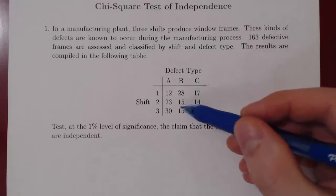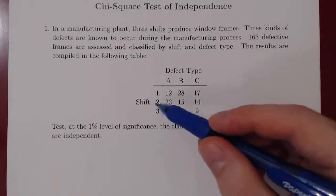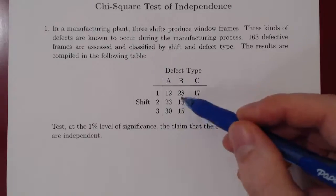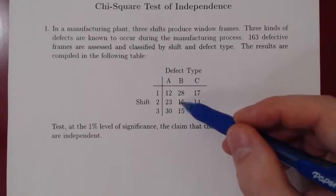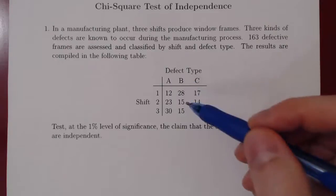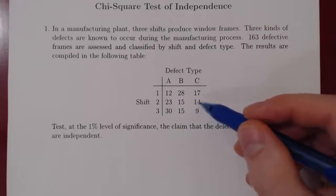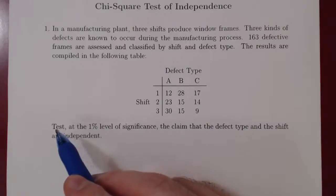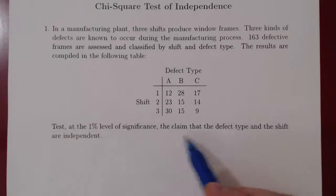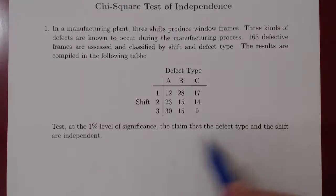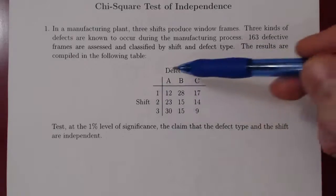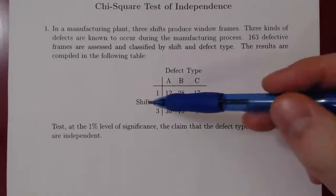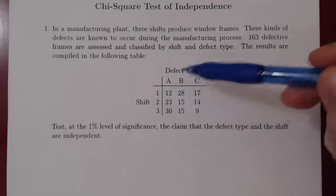For example, in shift number 2, there were 15 defective frames of defect type B, and 14 defective frames of type C that occurred during shift 2, and so forth. The question is: test at the 1% level of significance the claim that defect type and shift are independent — that is, are these two variables dependent or independent?